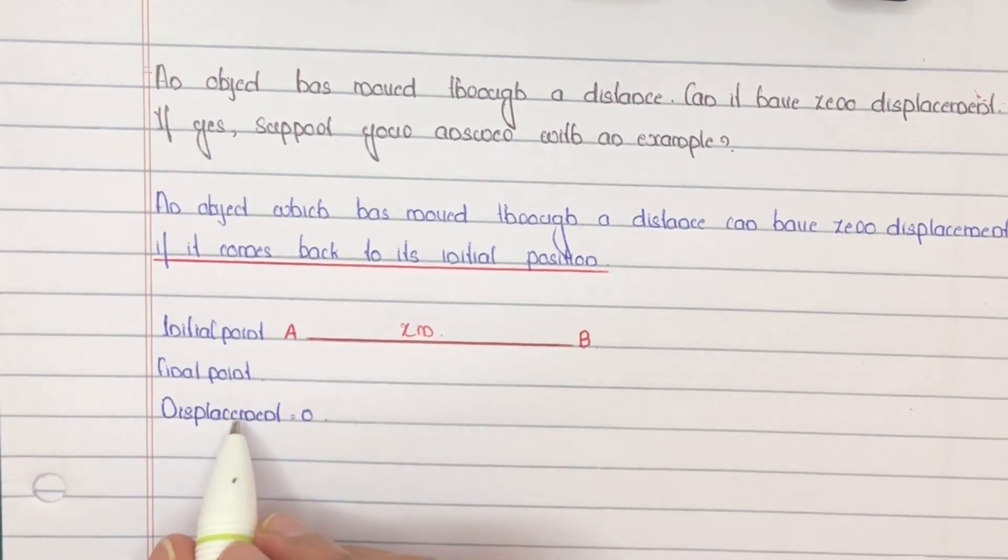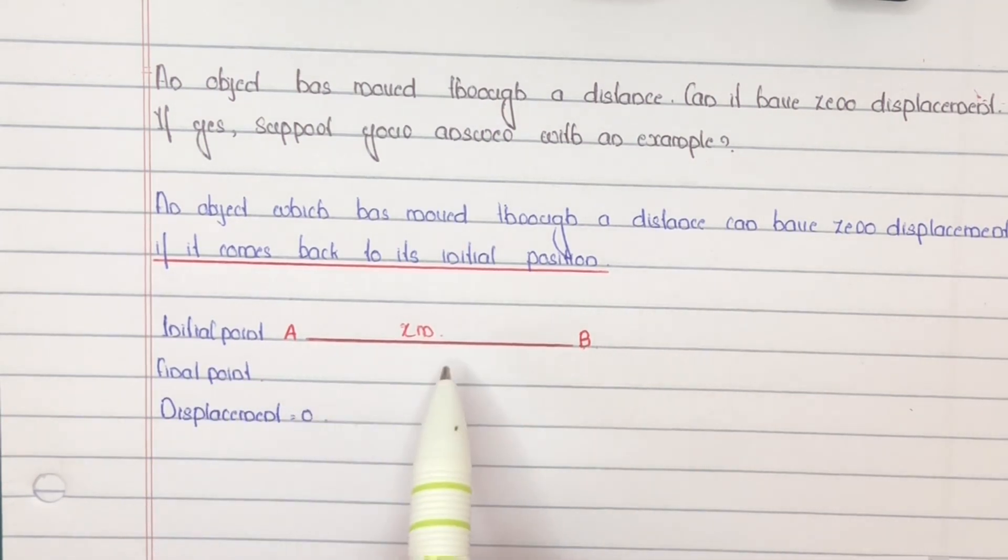Since displacement is the straight line distance or shortest distance between initial and final point, then what will be the distance? Distance is the actual length of the path covered by the body.